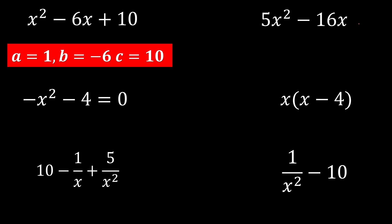5x squared minus 16x. If there is no constant, the constant is 0. So the coefficient for x squared is 5, the coefficient for x is negative 16, and c is just 0.